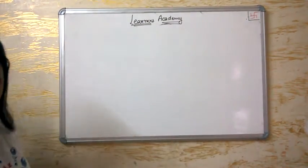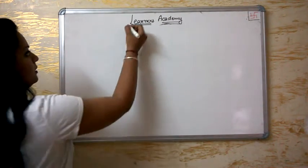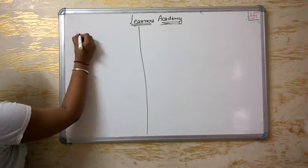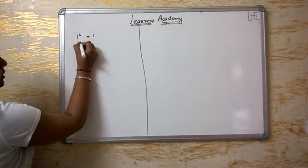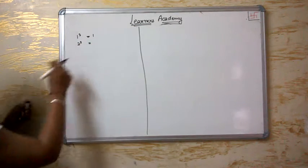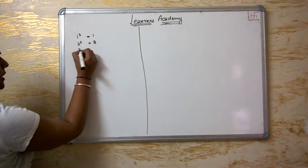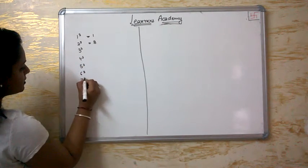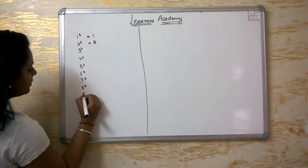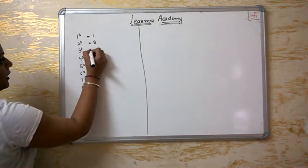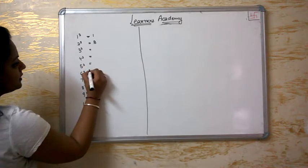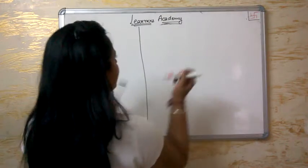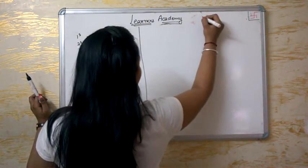For that, you have to learn a table — the table of cubes: 1 cube, 2 cube, 3 cube, 4 cube, 5 cube, 6 cube, 7 cube, 8 cube, 9 cube and 10 cube. It is not very tough to learn this table because it is basic cubes. This lecture is all about finding cube roots.